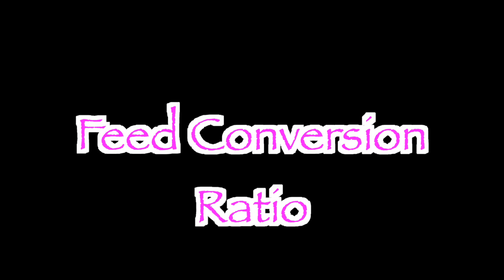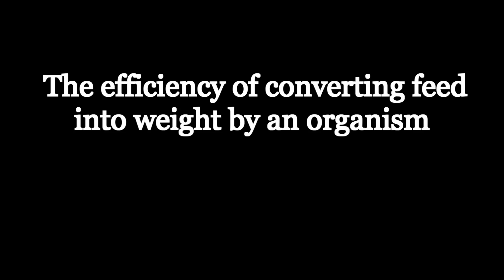The feed conversion ratio is defined as the efficiency of converting feed into weight by an organism. In simple terms, it's how much feed you have to put in for that fish or other organism to give you back one pound of weight. For example, if you put in five pounds of feed and get one pound of weight gain, you have a feed conversion ratio of five — which is typical for animals like cows and sheep.